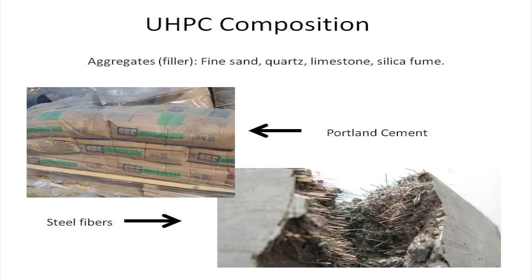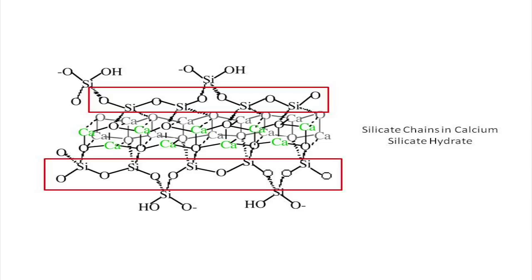Thin steel fibers in UHPC — about a centimeter long and a fifth of a millimeter thick — also reinforce the concrete and help make it slightly more ductile. The finer aggregates in the mix allow for greater packing density and make the mix more homogenous. Additionally, when mixed with water, calcium silicate molecules in the Portland cement undergo a hydration reaction that forms calcium silicate hydrate, which contains silicate chains important to the strength of the concrete. Similar to how polymer chains increase strength in polymer compounds, longer silicate chains in calcium silicate hydrate increase the strength of the concrete.